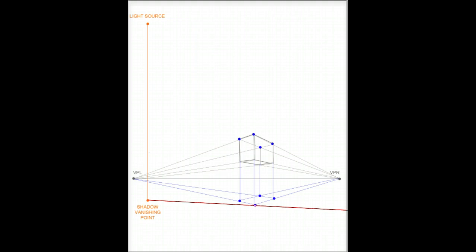So I want to draw guidelines from the shadow vanishing point through these points on the ground. You can see the light source is next to the object, so it's casting the shadow to the right. Then I want to draw guidelines from the light source through the top corners.